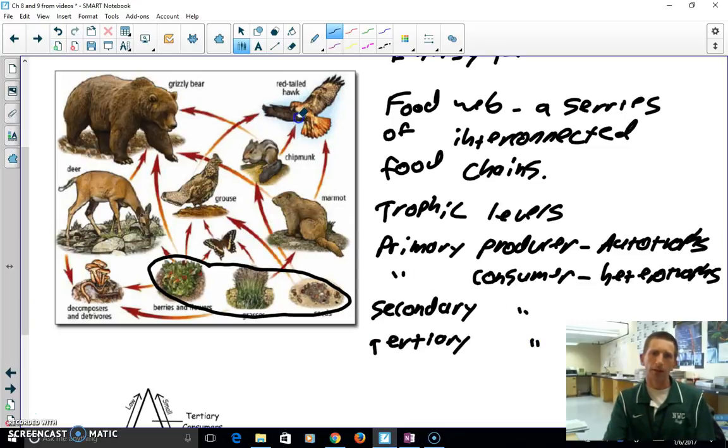So that's going to be like the hawk that eats the grouse, that's the butterfly that eats the grass. So primary producer, and then primary consumer, and then secondary consumer, and then tertiary consumer. So you see how that works. So those are our trophic levels.